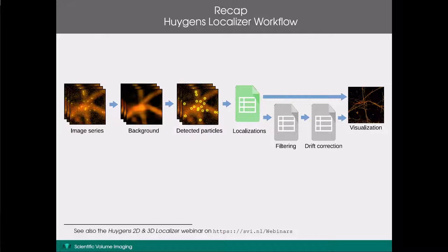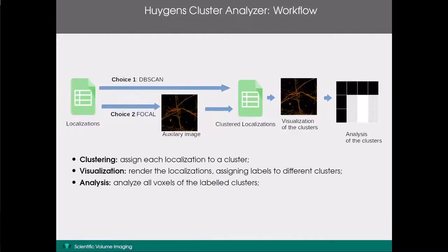Now that we have a rough idea of what the Huygens localiser does, we are ready to explain the Huygens cluster analyser workflow in some more detail. To start the Huygens cluster analyser, you only need the localisations table from the Huygens localiser workflow — and preferably the drift-corrected table if drift correction was necessary. The Huygens cluster analyser workflow can be split into three steps, starting with the localisations table.